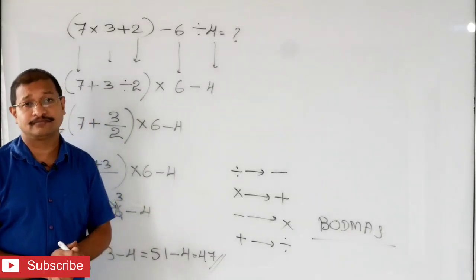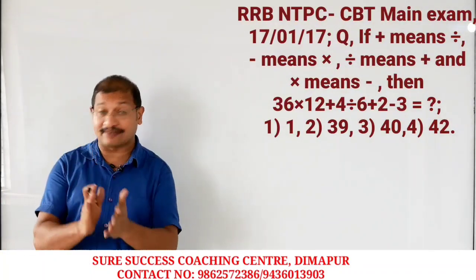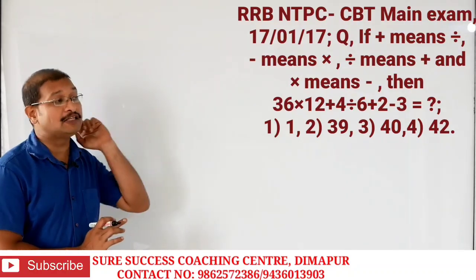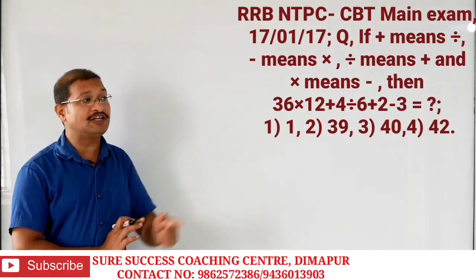Let's go to the next question. It came in RRB NDPC Main Exam 2017. If plus means division, minus means multiplication, division means plus, and multiplication means minus, then: 36 into 12 plus 4 divided by 6 plus 2 minus 3 equals question mark. Options: 1) 1, 2) 39, 3) 40, 4) 42.